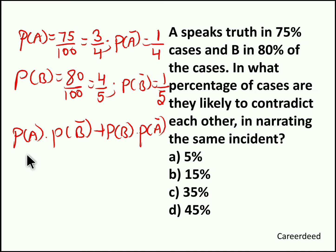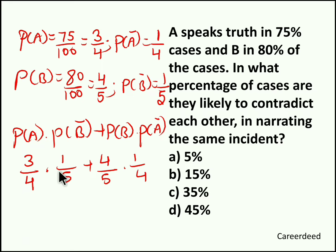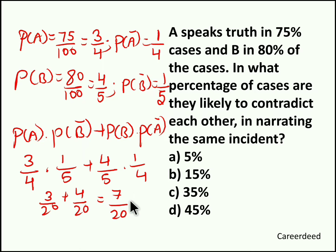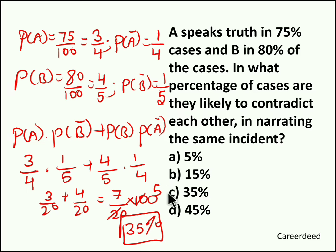So: A speaks truth (3 by 4) and B speaks lie (1 by 5), giving 3 by 20; plus B speaks truth (4 by 5) and A speaks lie (1 by 4), giving 4 by 20. So 3 by 20 plus 4 by 20 gives 7 by 20. But we need the answer in percentage, so multiply by 100: 7 by 20 into 100 is 35%. So 35% is the probability of cases where A and B contradict each other on the same incident.